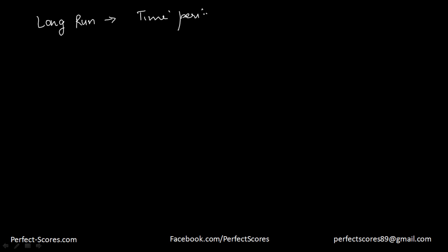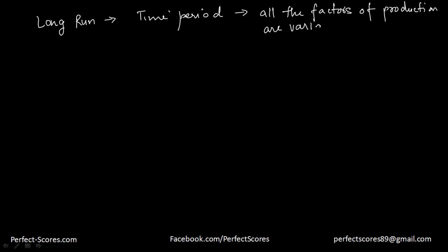Before we start, I hope you've already watched the previous videos where we defined a lot of things like long run and short run. So I'm going to define the long run again. The long run is the time period where all the factors of production are variable. The only thing which is fixed is the state of technology — you cannot change technology in the long run. All other factors remain variable; you can vary any factor that you want.